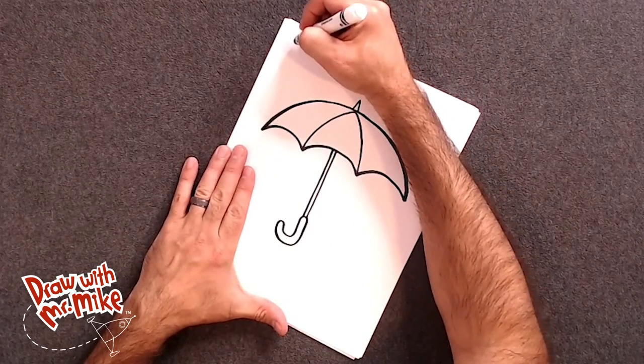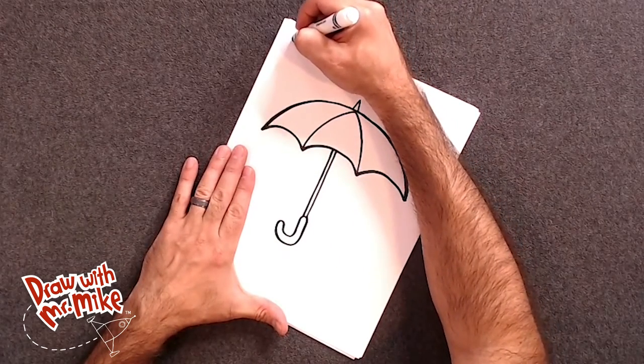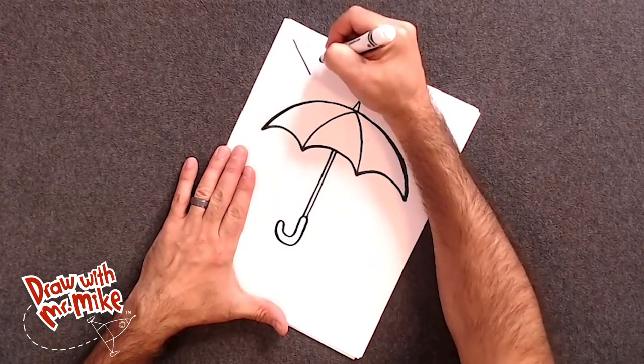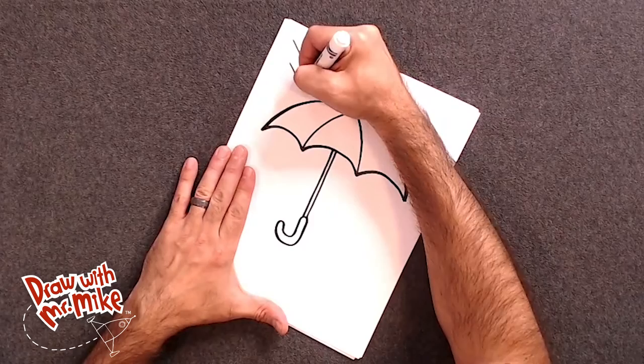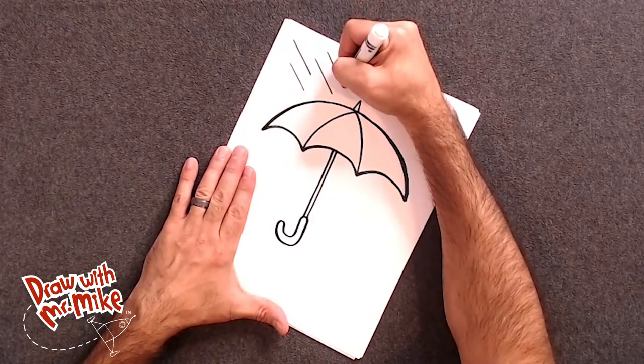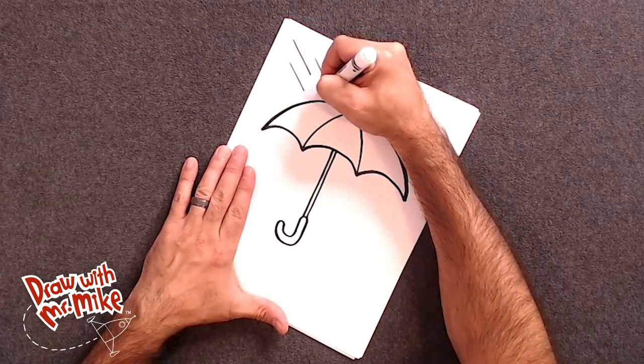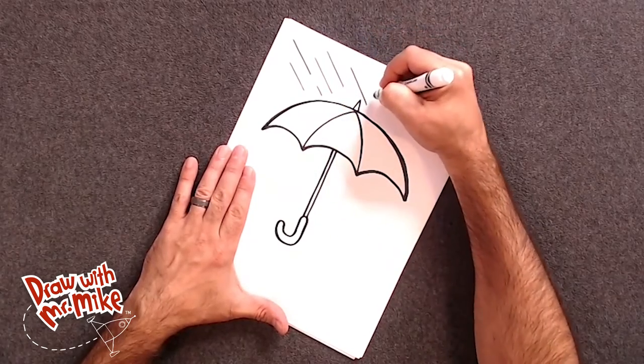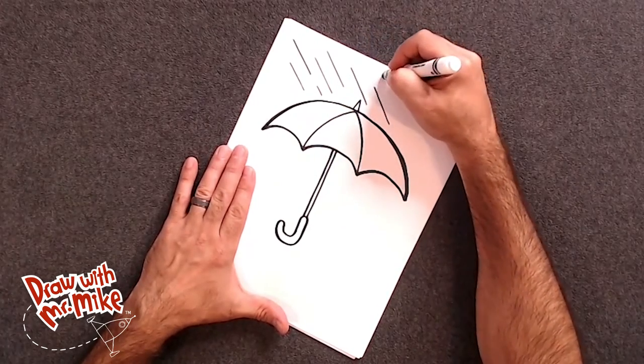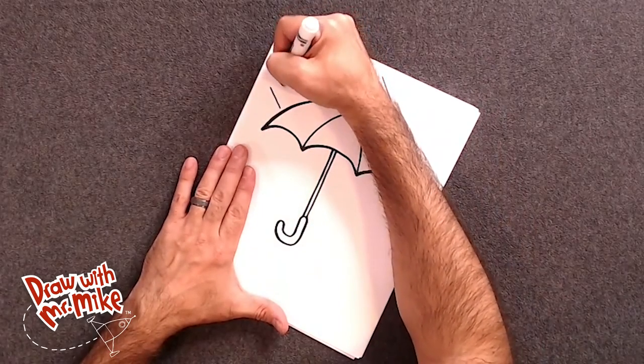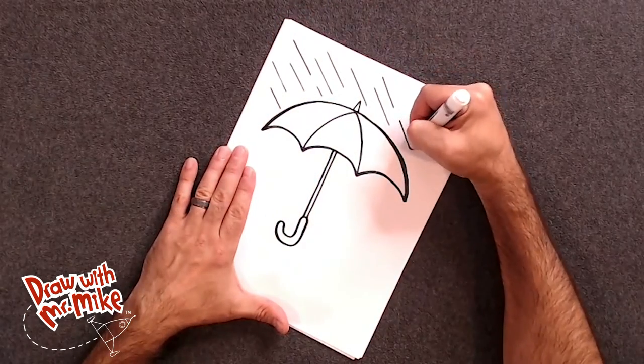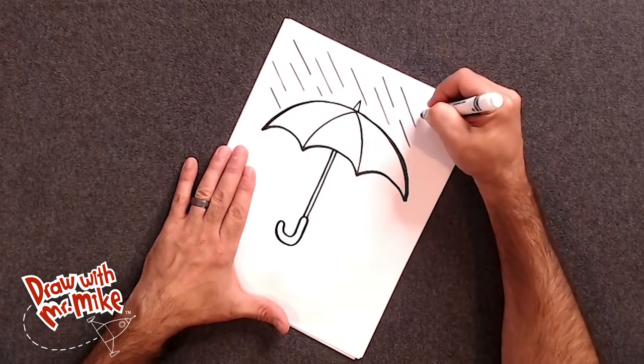So, here we go. Start here and we're just going to draw a line and then another line and then just keep repeating that and put your lines in different places because rain is all over the place. There is not any one spot that rain is going to be. It will be all over.